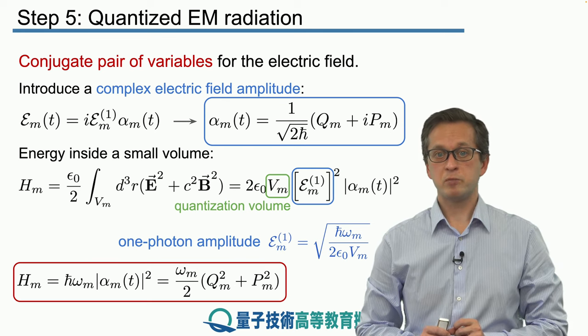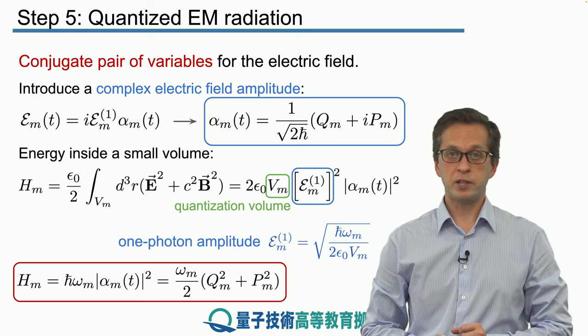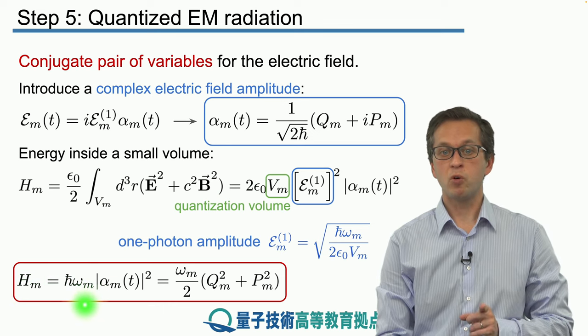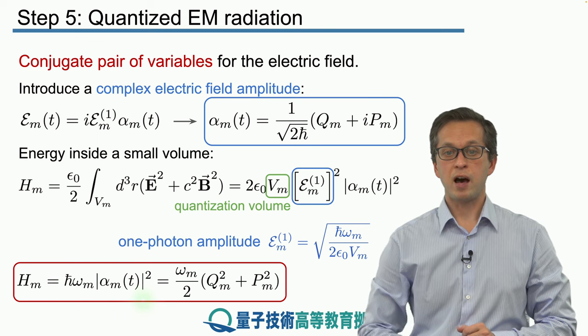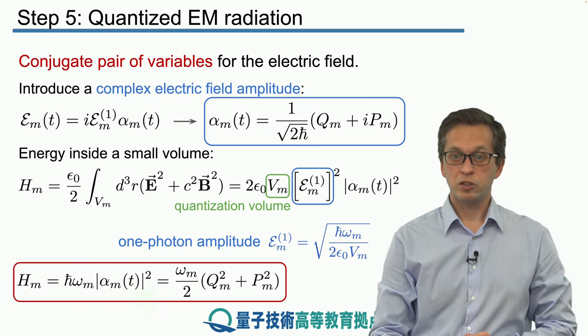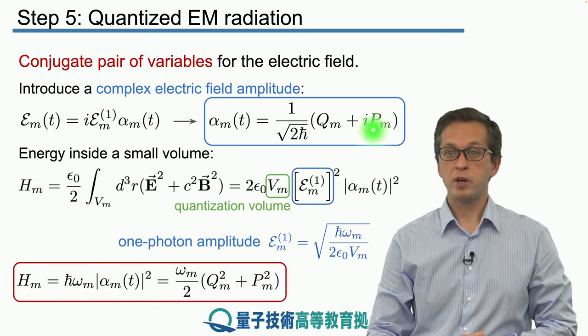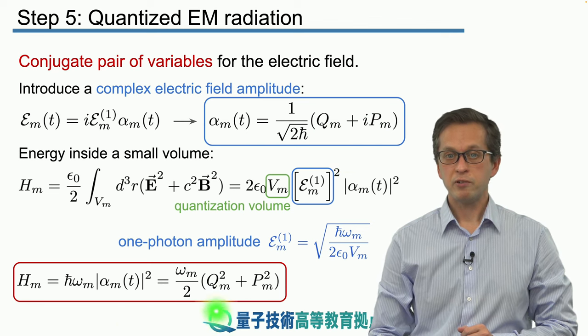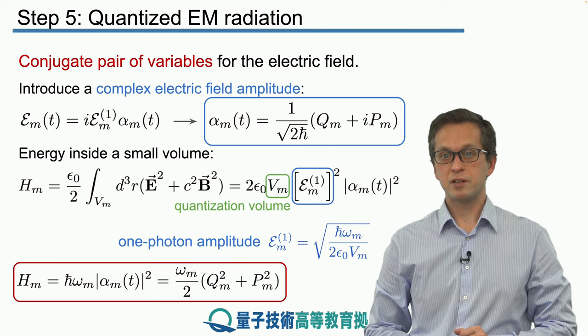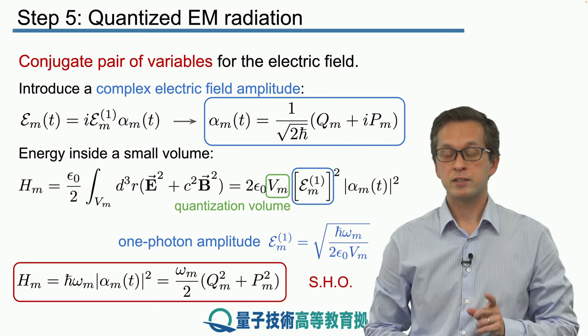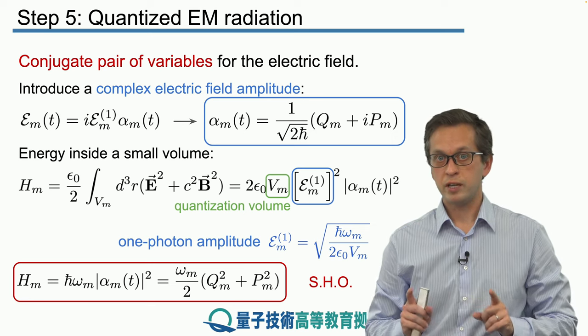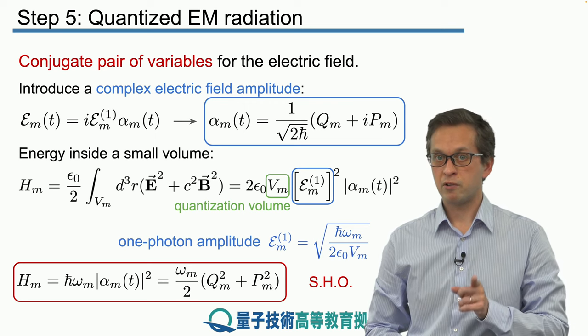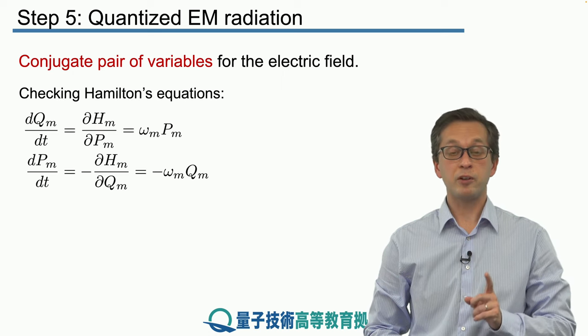The energy inside a small volume, in terms of our complex electric field amplitude alpha, is: H_m = ℏω_m |α_m|². In terms of Q_m and P_m: H_m = ℏω_m(Q_m² + P_m²)/2. Can you recognize this from the previous steps? It's the energy of a simple harmonic oscillator. Now we're starting to see the connection between simple harmonic oscillations and electromagnetic radiation. But we're still in classical physics—we still need to apply canonical quantization.